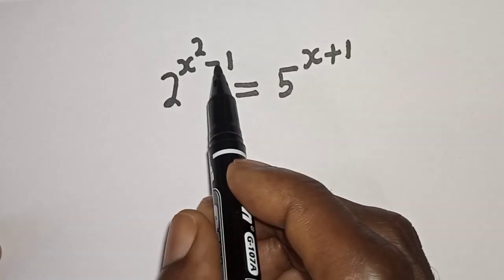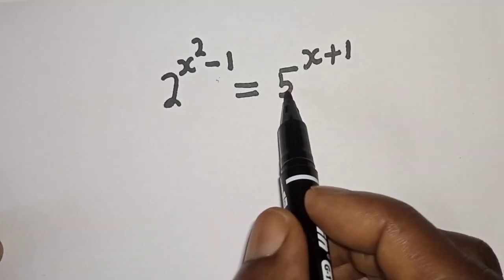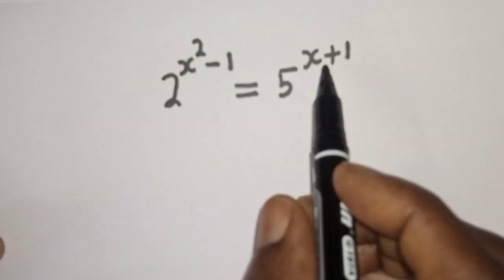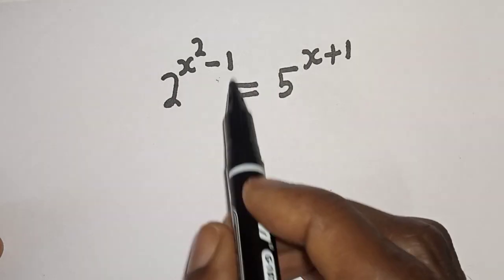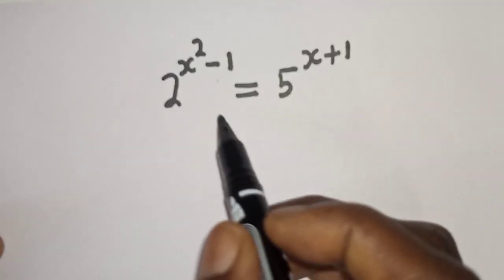2 raised to power x squared minus 1 is equal to 5 raised to power x plus 1. What is the value of s?